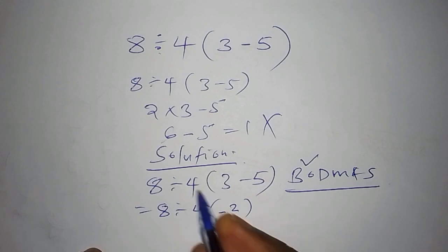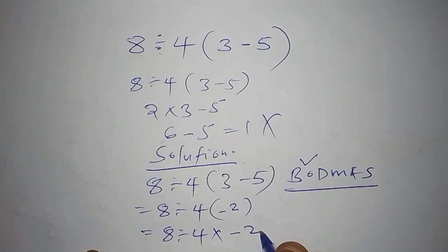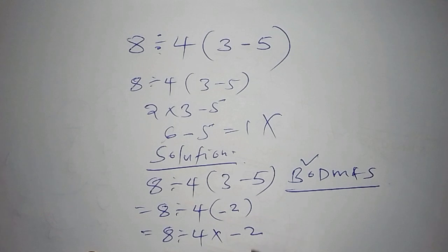Now we want to expand the bracket. We shall have 8 divide by 4. If you want to expand this bracket, whatever is outside the bracket you multiply with whatever is inside the bracket. That's why now we shall have multiplied by minus 2.